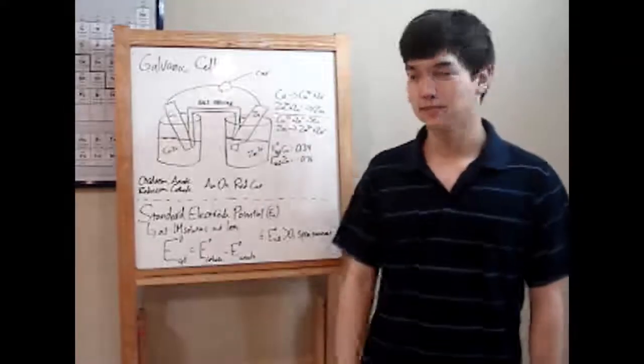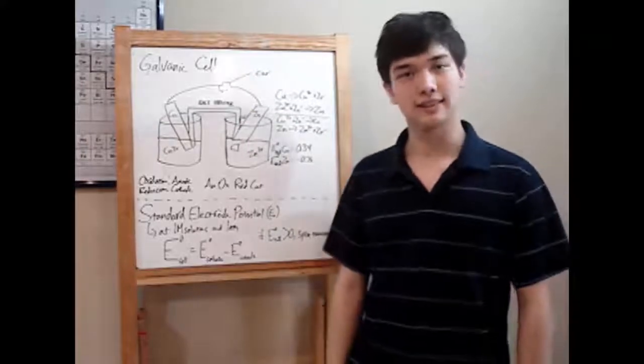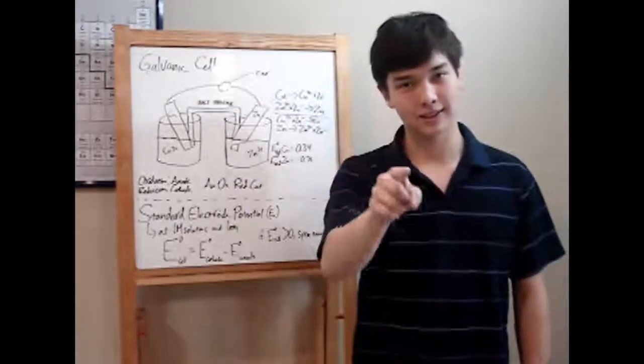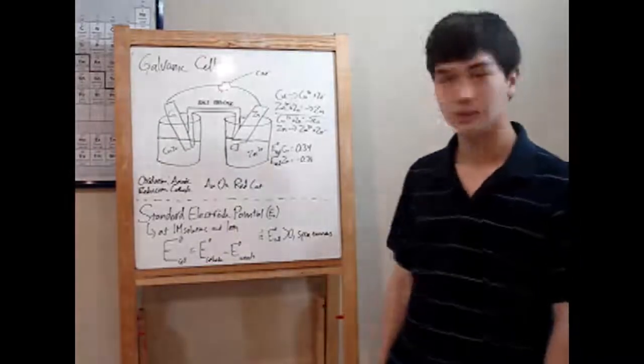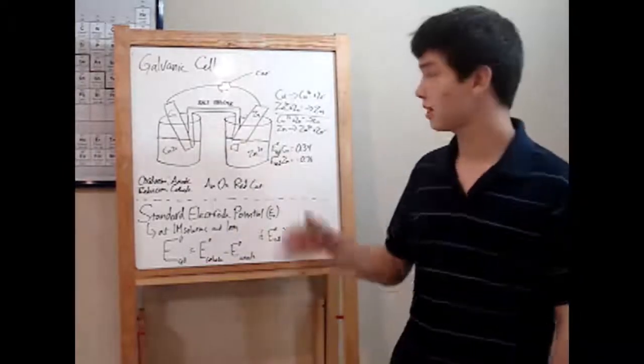This is a galvanic cell. So you might think that you're not going to find one of these just lying around. Well, you're wrong. Look under your car's hood. This is your basic car battery. And yes, you'll also see them in chemistry. So we're going to run through how these things work.